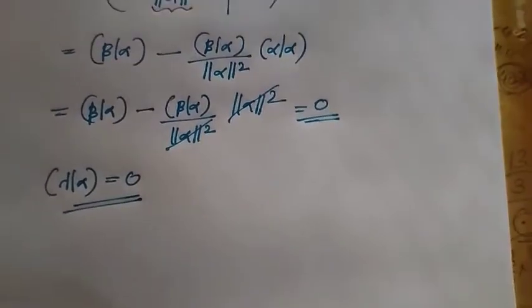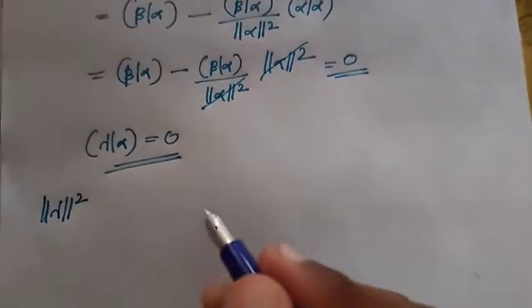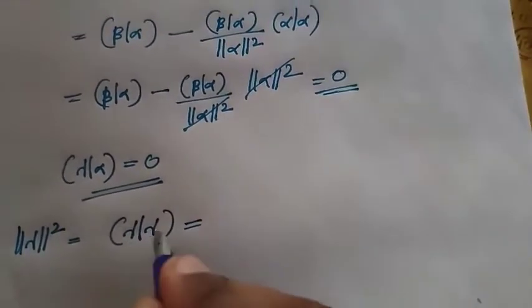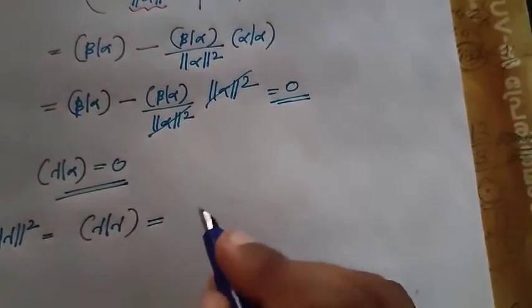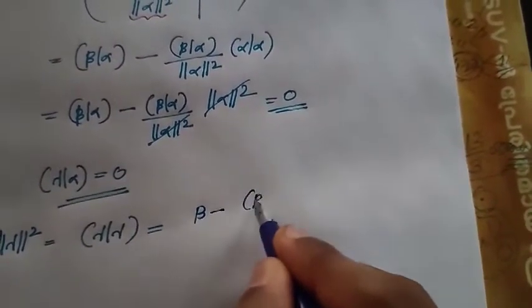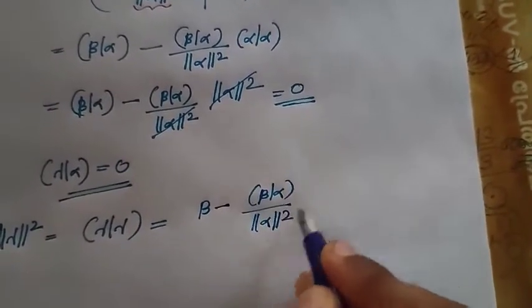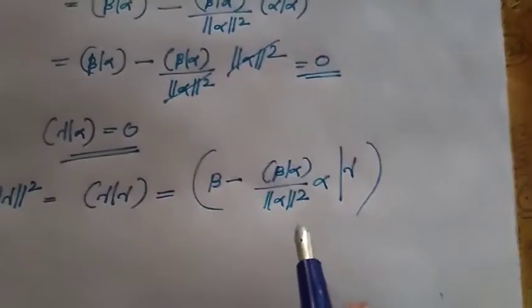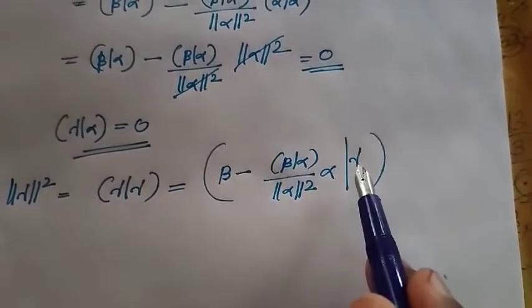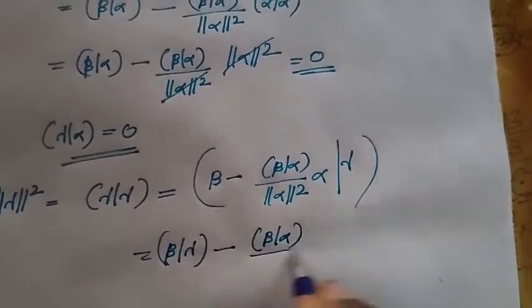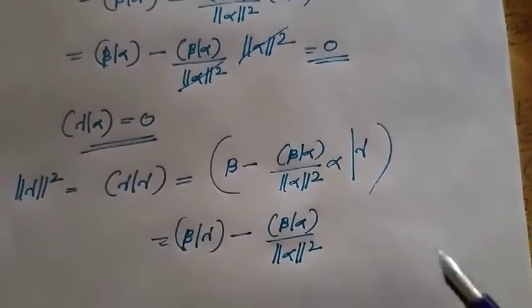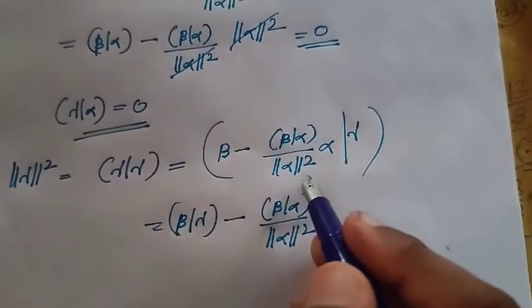Now we find ‖γ‖², which equals ⟨γ, γ⟩. Substituting the value of gamma: ⟨γ, γ⟩ = ⟨β − (⟨β,α⟩/‖α‖²)·α, γ⟩. Applying the properties of inner product spaces, this expands to ⟨β, γ⟩ minus (⟨β, α⟩/‖α‖²)·⟨α, γ⟩, where ⟨β,α⟩/‖α‖² is a scalar.